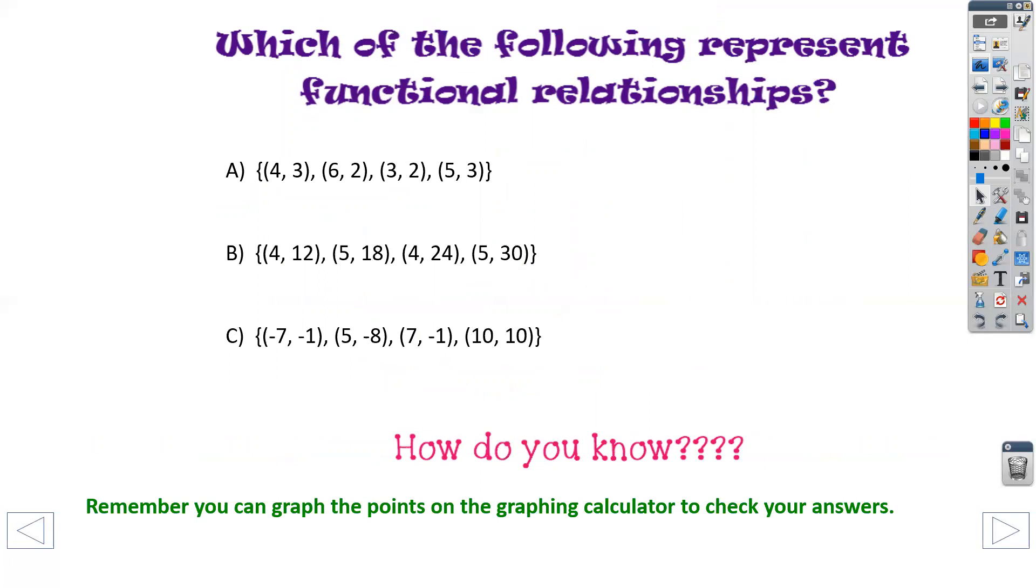All right. Which of the following represents a functional relationship? So remember, coordinates are always X and Y and all the way down. So if I look at only my X's on A, 4, 6, 3, 5, do any of them repeat? They do not. So that's a function. B, 4, 5, 4, 5. They repeat? Not a function. C, negative 7, 5, 7, 10. They do not repeat. Even though I see 7s, one's positive, one's negative. So that one is a function. And again, you can graph these to double check yourself.